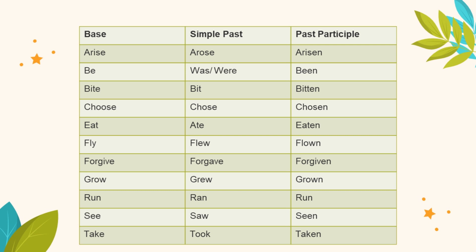Some examples of irregular verbs: be — was/were — been; bite — bit — bitten; choose — chose — chosen; eat — ate — eaten; fly — flew — flown; forgive — forgave — forgiven; grow — grew — grown; run — ran — run; see — saw — seen; take — took — taken. These are just some of the irregular verbs in the English language.